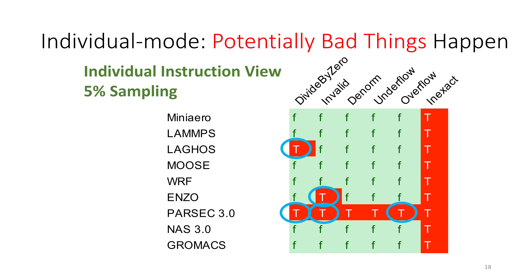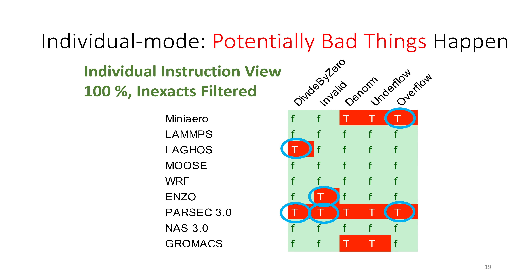Running in individual mode at 5% sampling, the table differs slightly because we're not trapping all the same instructions, but we are trapping the inexacts and rounding. Again, highlighted are divide by zero, invalids, and overflows that seem problematic. In a third configuration, we run at 100% of instructions but filter out rounding behavior to keep overhead manageable. We still clearly see divide by zero, instructions in Enzo that could generate NANs, and overflows. In individual mode, we can dig deeper because we're trapping individual instructions that cause these events.